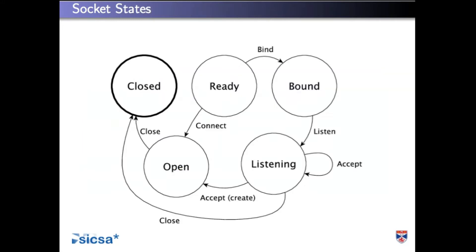This is what we'd like to express. We saw something a bit like this with the door system yesterday — it just had two states. Now we've got quite a few: starting in the ready state — a newly created socket we haven't done anything with — we bind it to a port, listen for a connection, and if we accept a connection, we have one listening socket and a new open socket. So accepting creates two sockets. We can only send and receive messages on a socket if that socket is open.